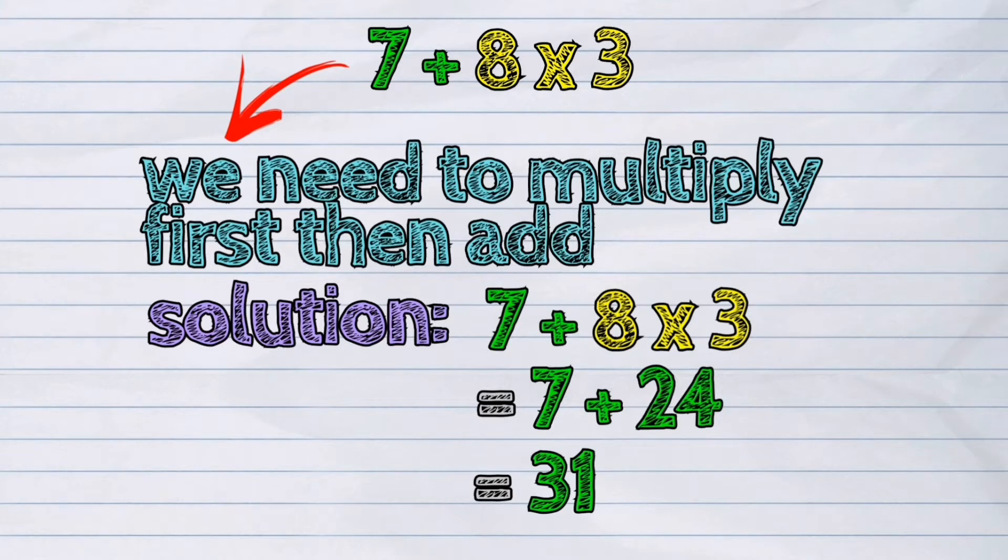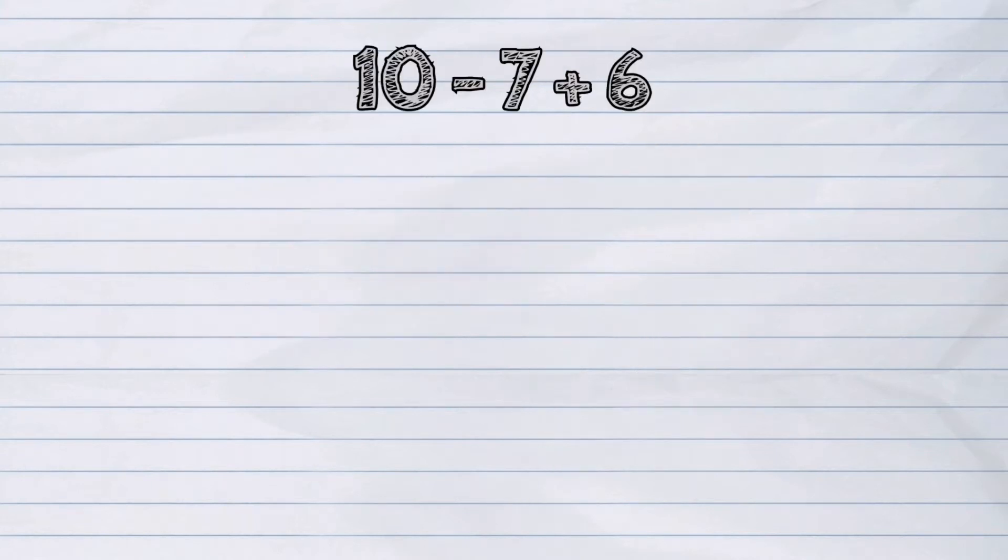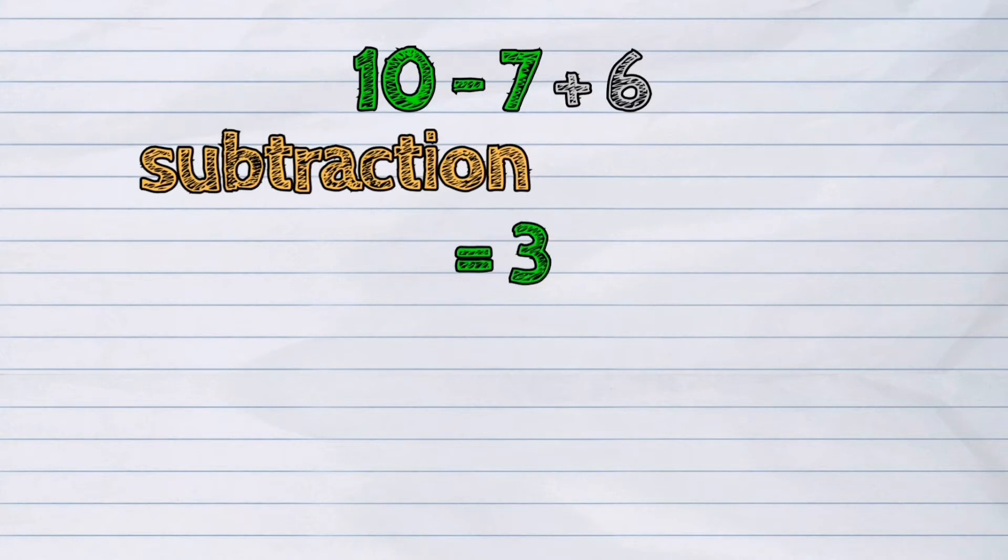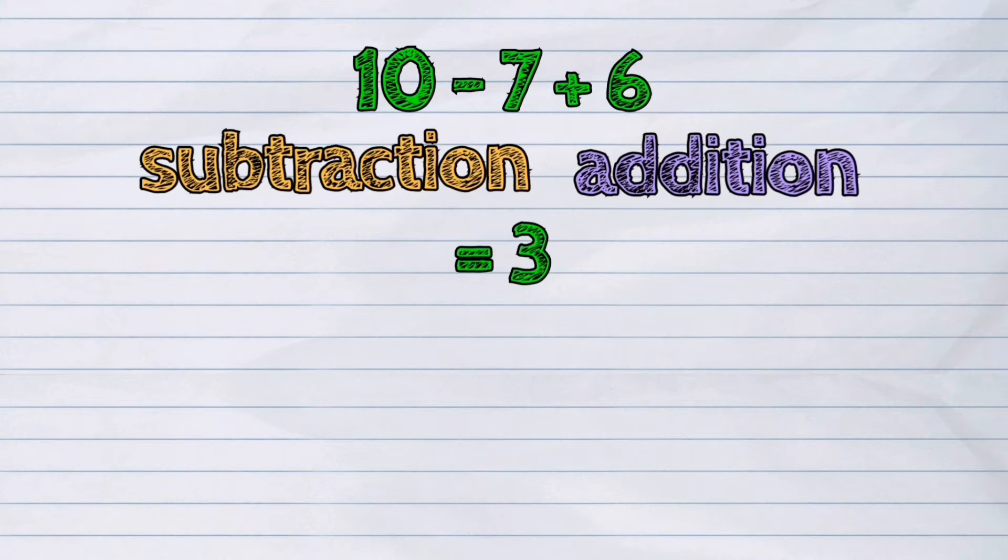Let us try other expressions. 10 minus 7 plus 6. The first operation is subtraction since it comes first, then addition. So it would be 10 minus 7 is 3, then addition. 3 plus 6 is 9.